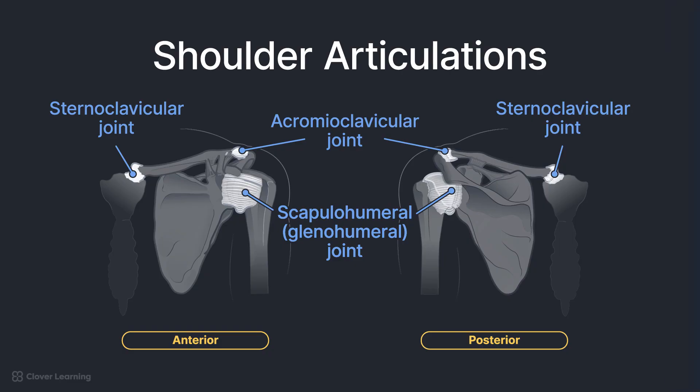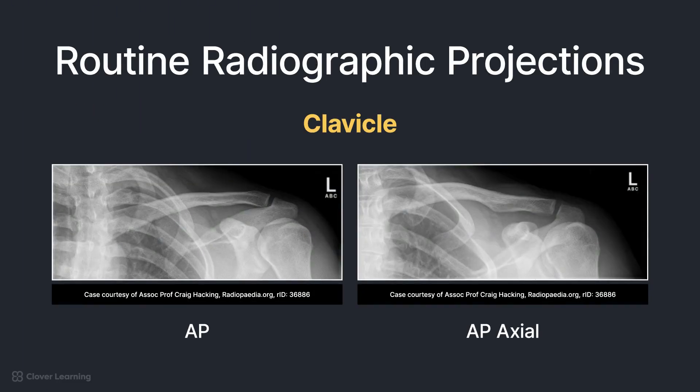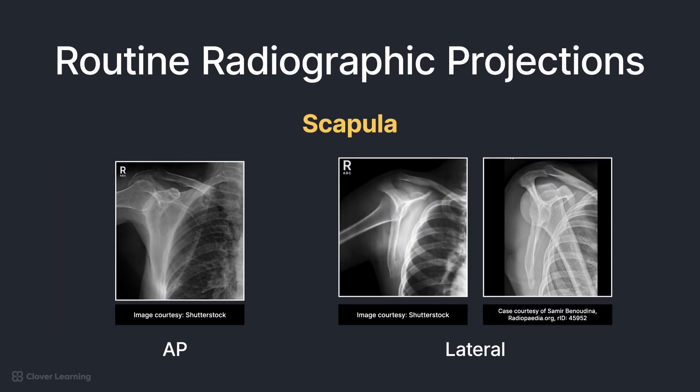The SC joints are discussed in more detail in a separate lesson. Routine radiographic projections of the clavicle include AP and AP axial. AP stands for anteroposterior, meaning the beam enters the anterior portion of the patient and exits the posterior portion. Since the second view is an axial, either the patient, the central ray, or both are angled. Routine radiographic projections of the scapula include the AP and lateral. The lateral projection is achieved with the patient in an anterior oblique position, rotated 45 to 60 degrees depending on the area of interest. Anterior obliques are preferred because they protect the thyroid, breast tissue, and other radiosensitive tissues from the direct beam.